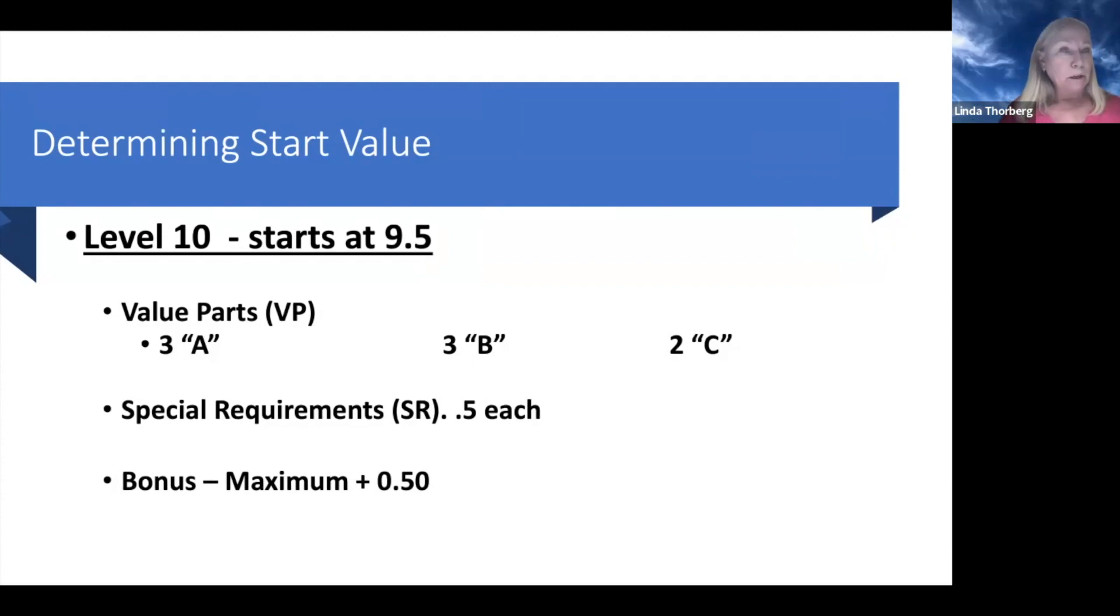Our special requirements are worth five tenths each, and we are allowed to earn five tenths in bonus from our 9.5. So you write your 9.5 on your paper. You check, does she have three A's, three B's, two C's? Does she have the four special requirements? And then you add in the bonus that she got to get to her 10.0 start value.